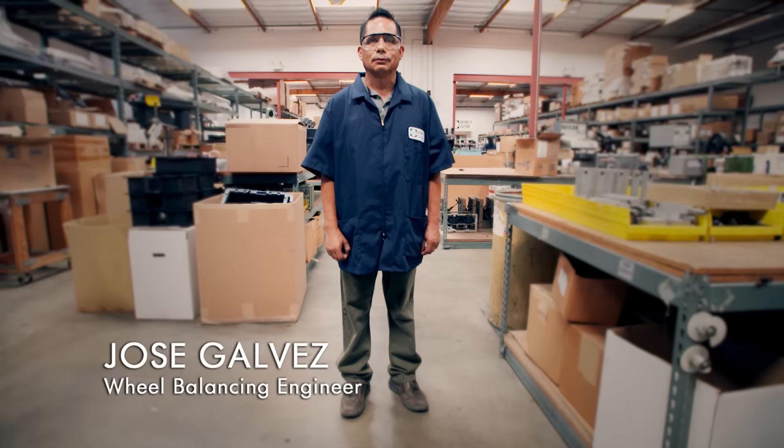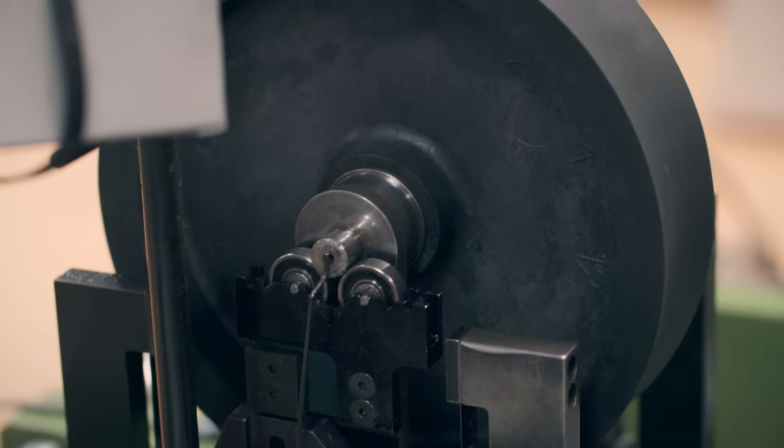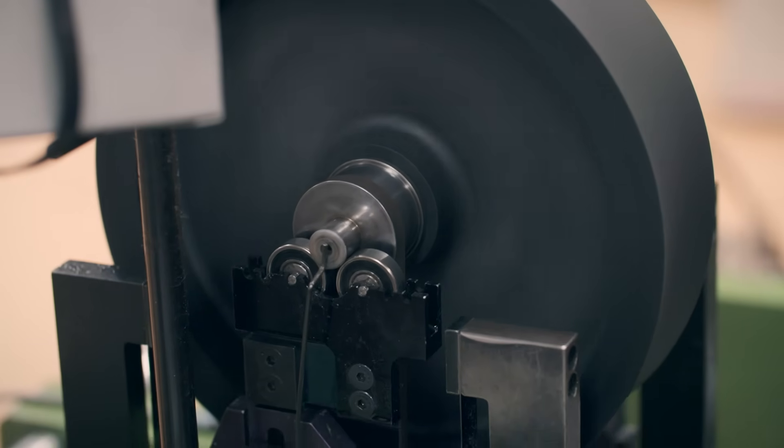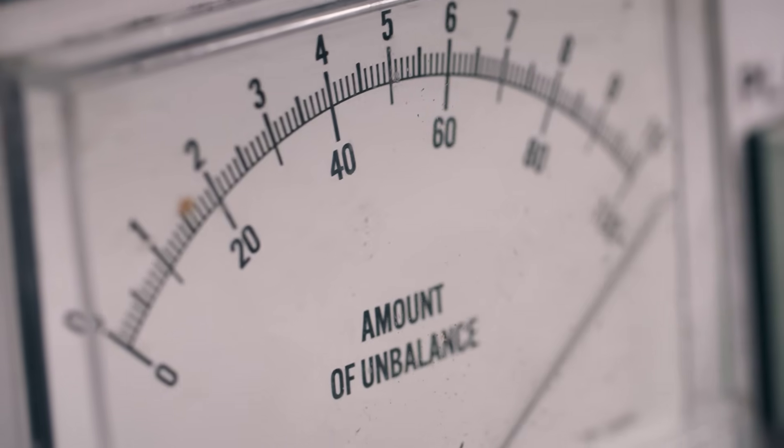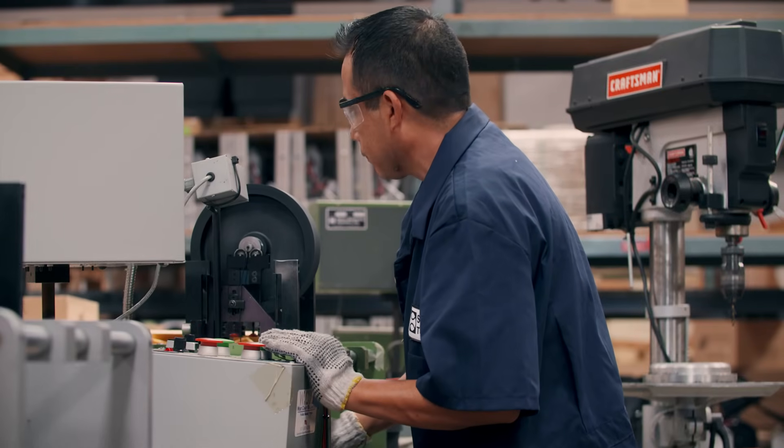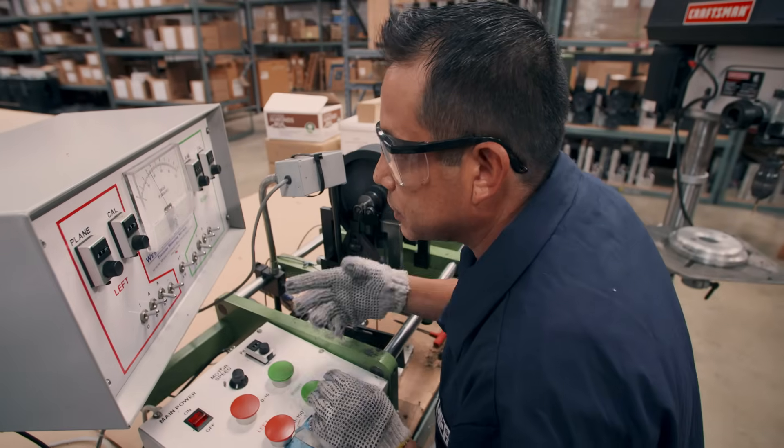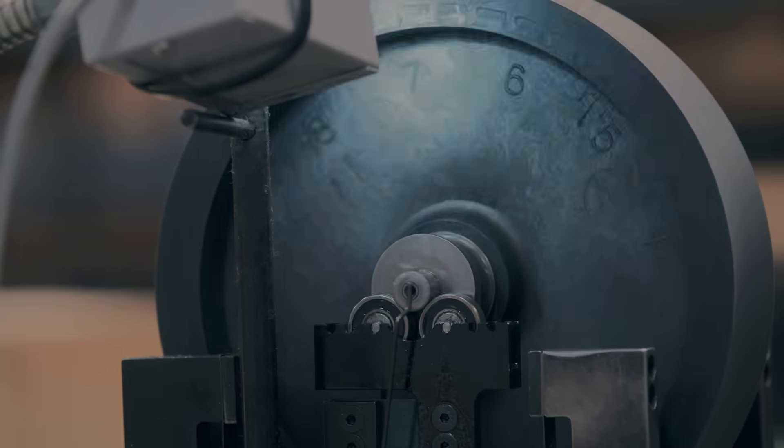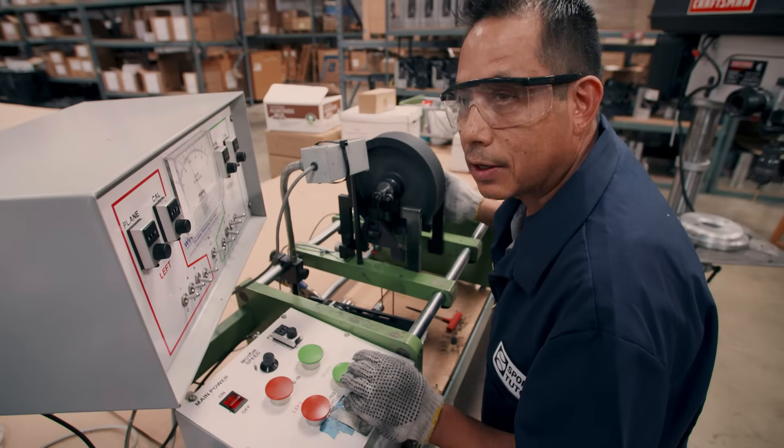Jose makes sure all the wheels run smoothly. His machine measures how much the wheel wobbles and where the excess weight is. His aim is to get this gauge to read less than one. To remove the weight, Jose simply drills holes in the wheel's rim. Your machine is telling you where to drill. We have to drill between six and seven on your right-hand side.